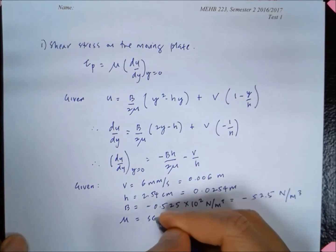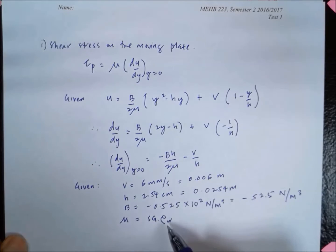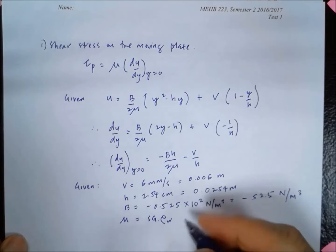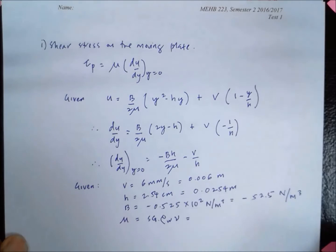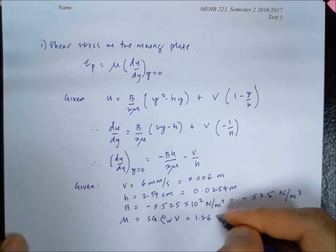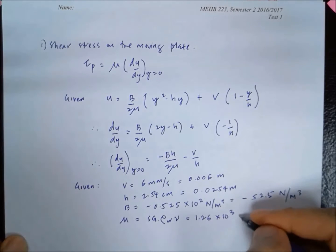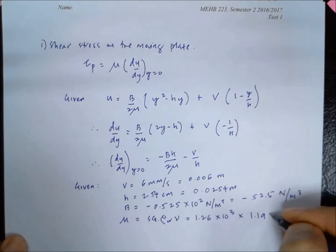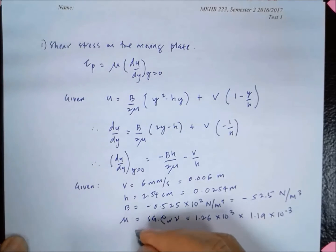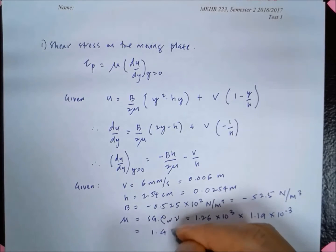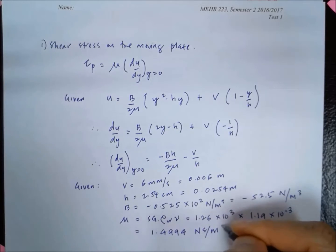The value of mu, the dynamic viscosity, is equal to the specific gravity multiplied by rho of water times nu. So that is 1.26 times 10 to the 3 times 1.19 times 10 to the minus 3. This gives us viscosity equal to 1.4994 newton second per meter squared.